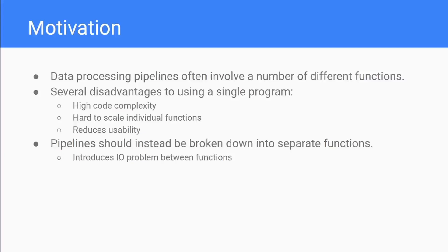Normally when we're developing data processing pipelines we need to carry out a number of different jobs or functions on a given piece of data. The old-fashioned approach is to use a single monolithic program which will take in our data, process it, and then spit it back out. However, using a single program with lots of functions built in can introduce high code complexity and makes it hard to scale individual functions - if one function is particularly computationally intensive, duplicating it within a single program becomes quite difficult.